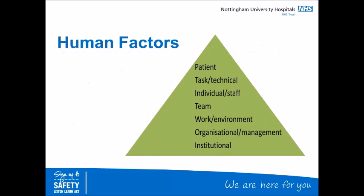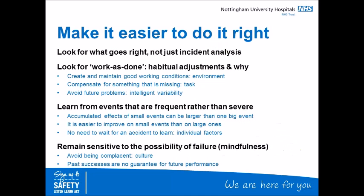The human factors headings traditionally used in FMEA are: patient; task or technical; individual or staff; team; work or environment; organisational or management; and institutional. FMEA facilitates learning from events that are frequent rather than severe. The accumulated effects of many small events can be larger than one big event, and it may even be easier and more effective to make improvements around these smaller events for a bigger impact on safety. As with all improvement work, the emphasis is on making it easier to do the right thing. Integrating standards and guidelines into everyday work is not always straightforward, and looking at the whole system rather than just incident analysis allows identification of work as done.